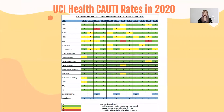At UCI, there were a total of 39 CAUTIs in 2020. The goal per unit is to have zero CAUTIs. CAUTIs have been associated with increased morbidity, mortality, healthcare costs, and length of stay.